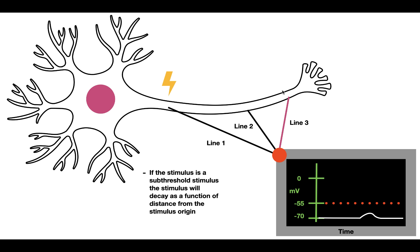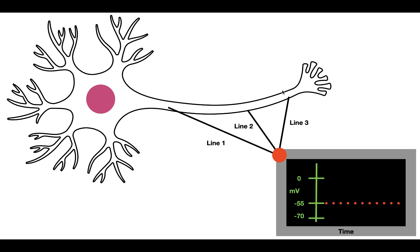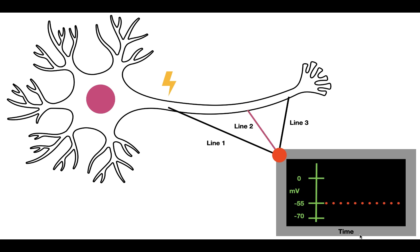What if the stimulus were enough to initiate an action potential? If we repeat the experiment with a stimulus originating at line one that is high enough to surpass threshold — the point at which inward current exceeds outward current — the cell fires an action potential. At line two, the initial stimulus that started the action potential is smaller due to distance, but the action potential itself is the same size. The graded stimulus decreased in strength while the action potential maintained its strength.